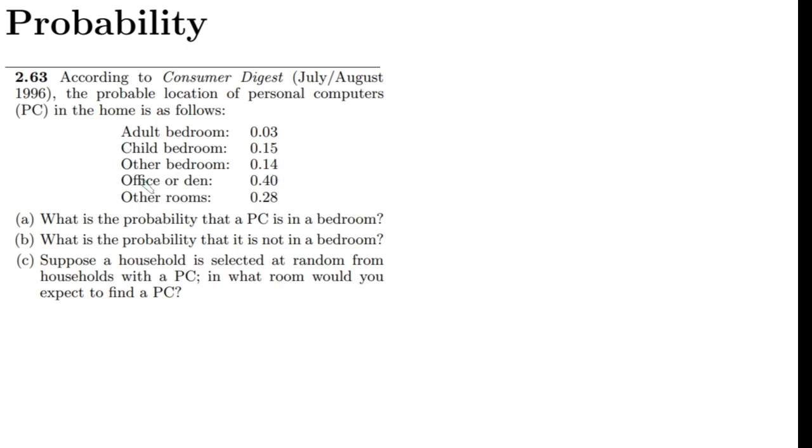These are for the bedrooms. For the office or den this is 0.40, and for the other rooms this is 0.28. What do we have to find in part (a)? We have to find the probability that PC is in a bedroom.